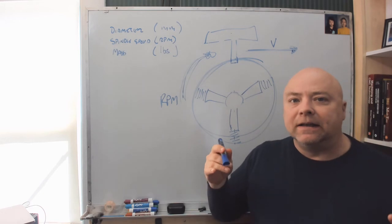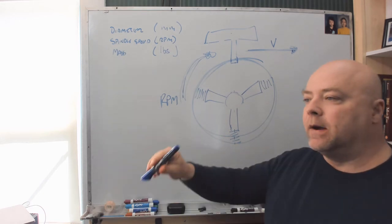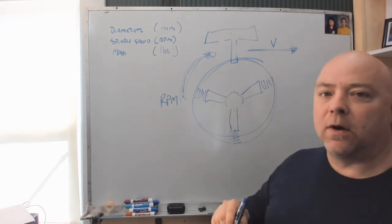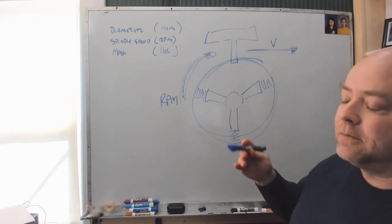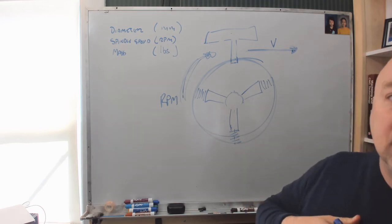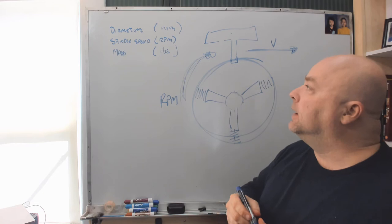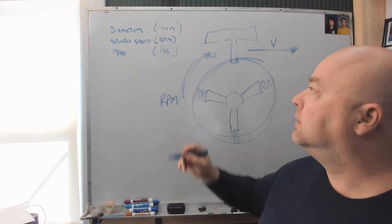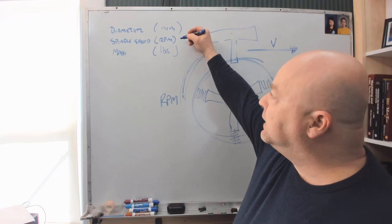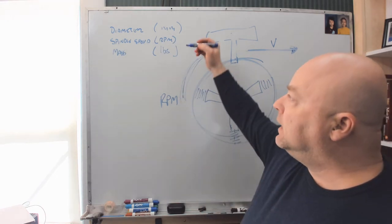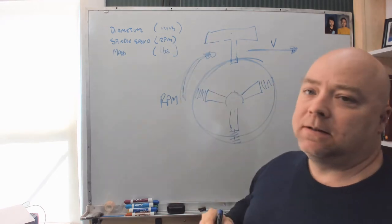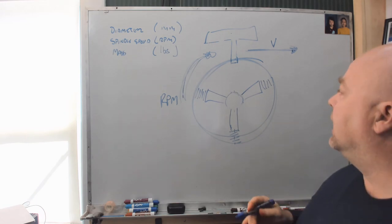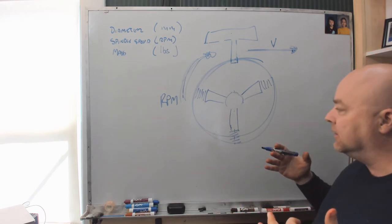And so the question is: how much energy is in the chuck key when it strikes you in the forehead, assuming that you are the operator? We've been given a diameter in millimeters, a spindle speed in RPM, and the mass in pounds. So what we need to do is figure out how can we turn this information into kinetic energy.